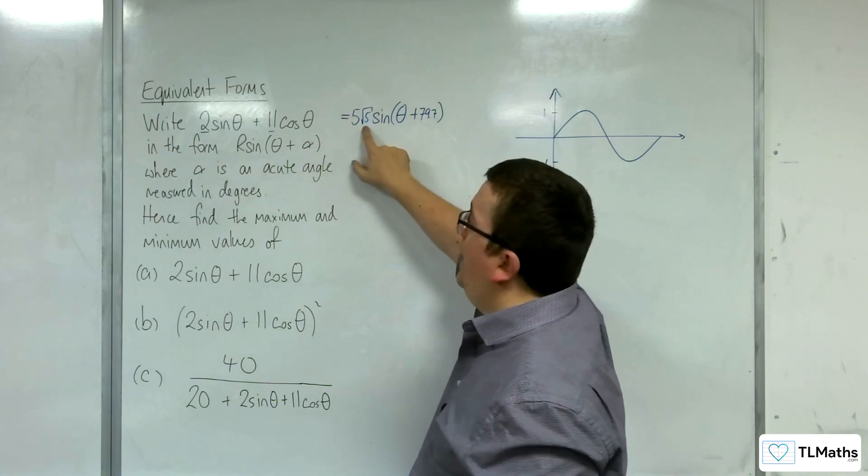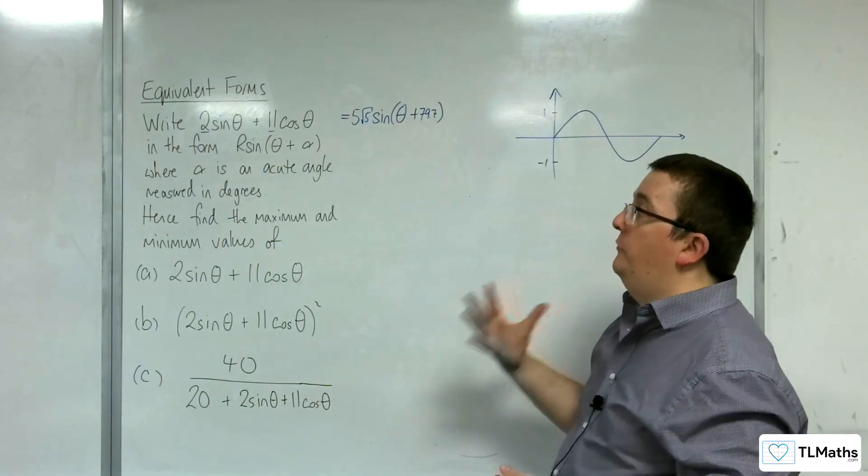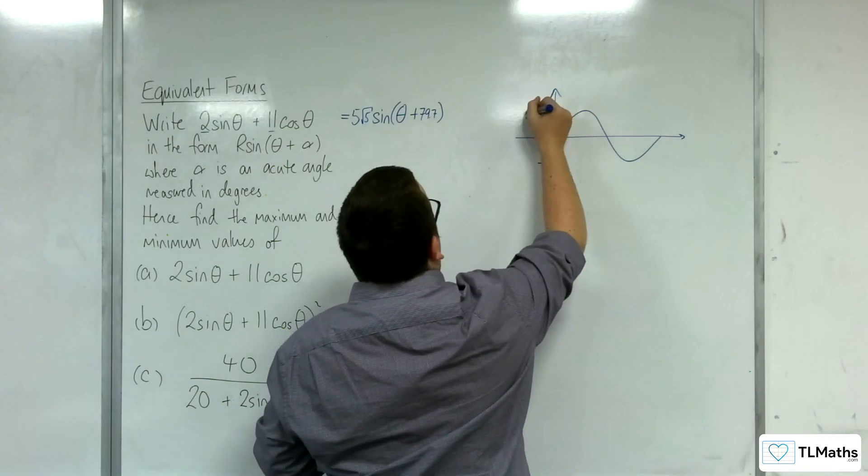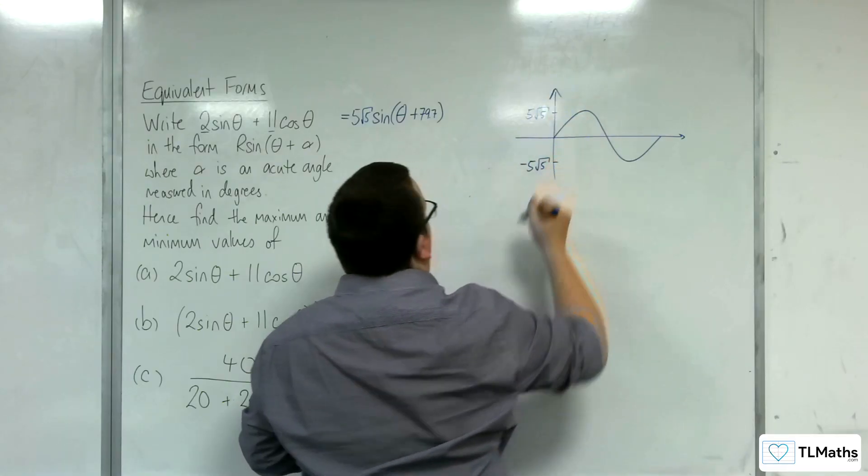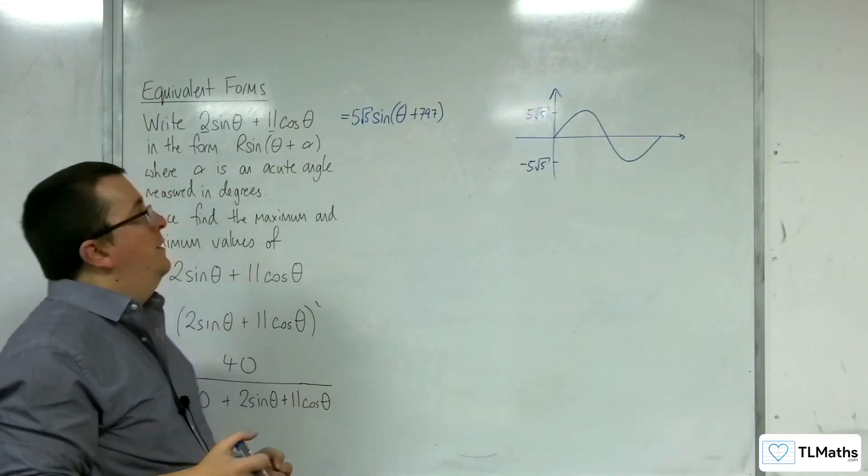This bit here, though, this is a stretch parallel to the y-axis by factor 5 root 5. And so that stretches the curve so that now its minimum would be minus 5 root 5, and its maximum would be positive 5 root 5.